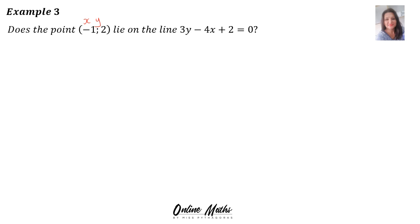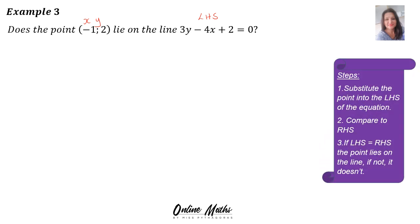But we will only substitute into the left-hand side. And then we will get an answer. And then if your answer on the left-hand side is equal to the answer on the right-hand side, then yes, the point lies on the line. So we can start with, on the left-hand side, in the purple block there's your steps. So then back to the sum on the left-hand side, now we're going to substitute the point.